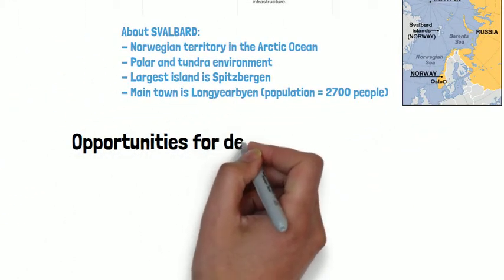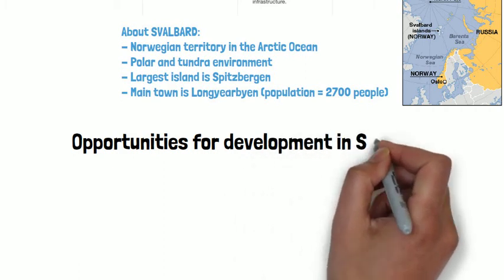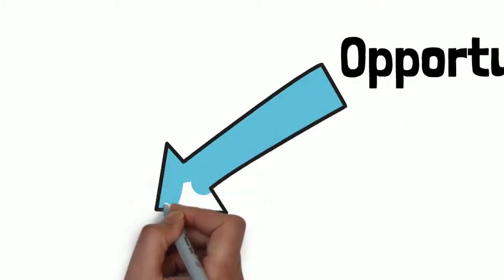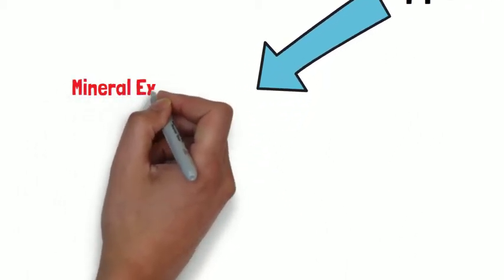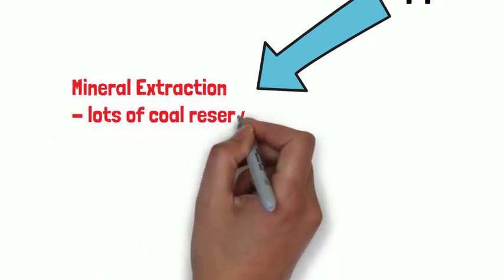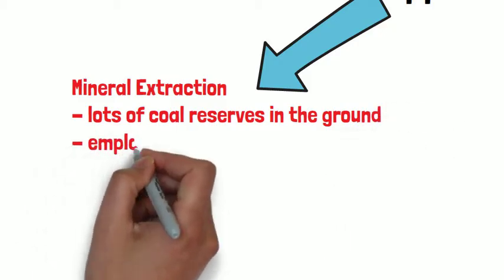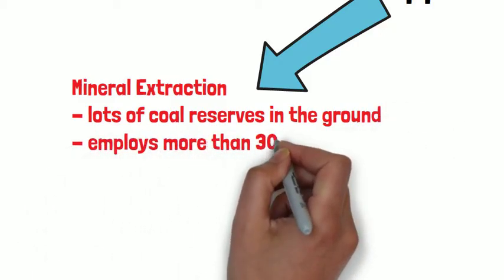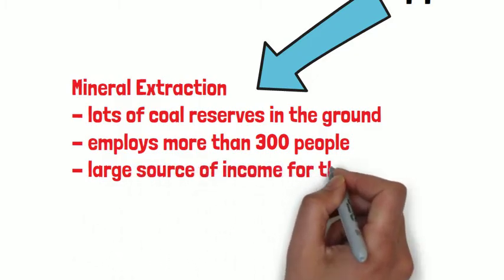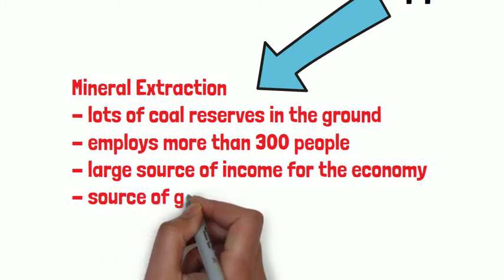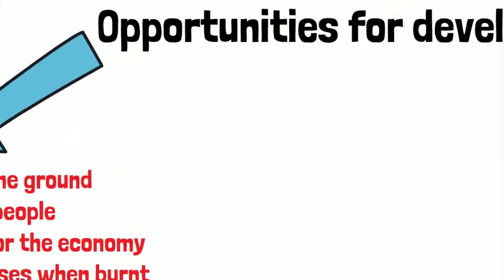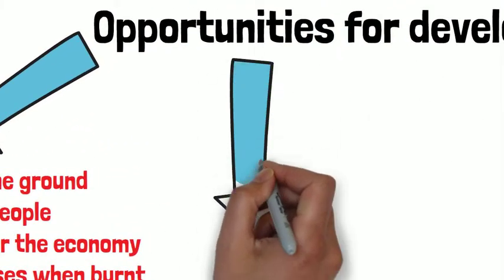Our first opportunity for development is mineral extraction. Underneath the ice in Svalbard there are large amounts of coal reserves, and mining for coal employs more than 300 people. It's a large source of income for the economy of Svalbard. However, coal is a source of greenhouse gases when burnt, which is bad for the environment.